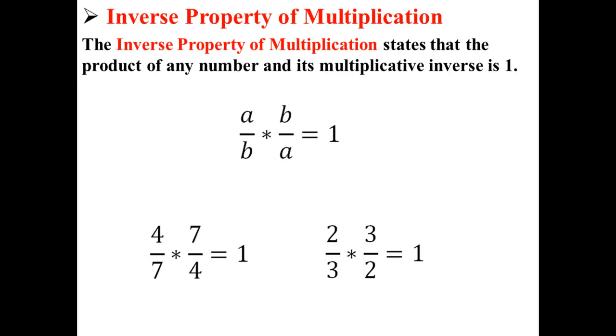Again, if we have the number 2 over 3, and we multiply it by its inverse, 3 over 2, then 2 over 3 times 3 over 2 is also equal to 1.